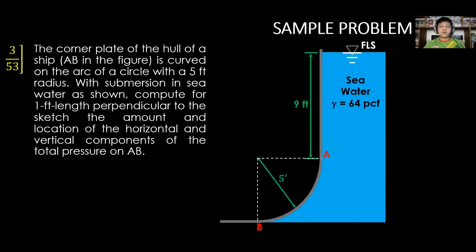For the sample problem — Problem 3 on page 53 — the corner plate of the hull of a ship, A-B in the figure, is curved on the arc of a circle with a 5-foot radius, with submersion in seawater as shown. Compute for one foot length perpendicular to the sketch the amount and location of the horizontal and vertical components of the total pressure on A-B.